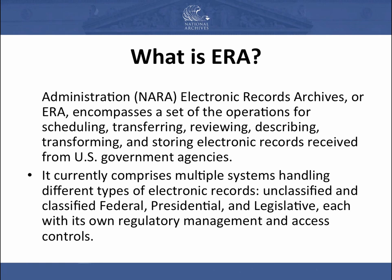Right now, the electronic records archive encompasses all the operations for scheduling, transferring, reviewing, describing, transforming, and storing electronic records that we get from U.S. Federal agencies. That's about 275 agencies that we receive the permanent records from. We get all of their permanent records as they identify and negotiate with us on records retention schedules.